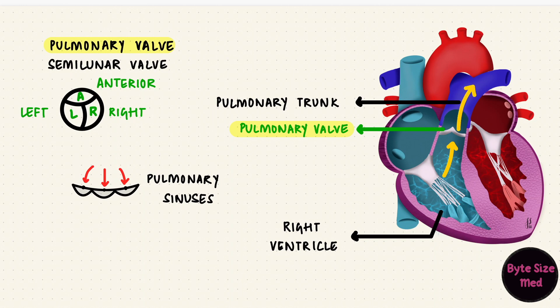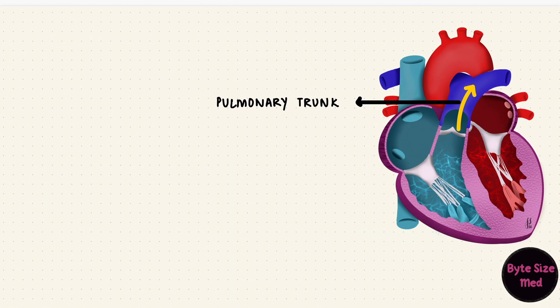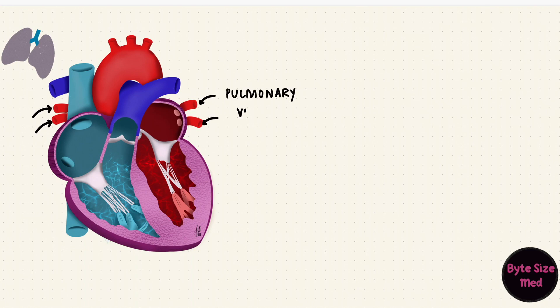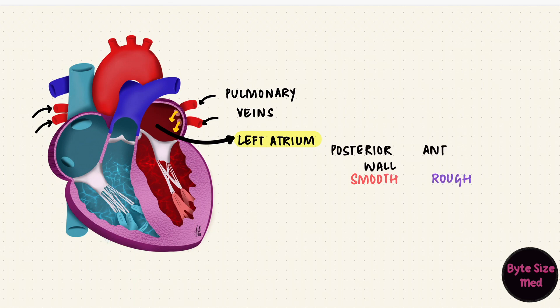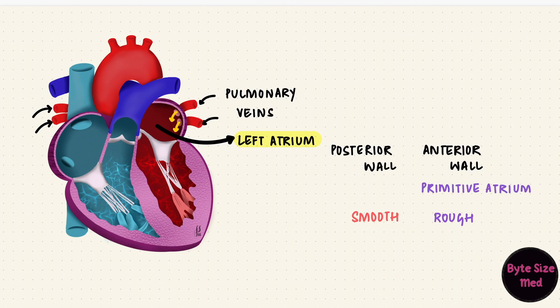Instead, it flows forward into the pulmonary trunk. The pulmonary trunk then divides into the right and left pulmonary arteries to go to the lungs where oxygenation happens. The oxygenated blood is brought back to the left atrium by the pulmonary veins. Four pulmonary veins open into the left atrium. Just like the right atrium, the left atrium also has a smooth posterior wall and a rough anterior wall. The anterior portion is derived from the primitive atrium, just like in the right atrium, but the posterior wall is formed by the absorption of pulmonary veins. In both atria, the posterior walls are formed from veins.